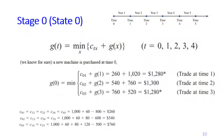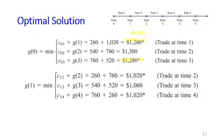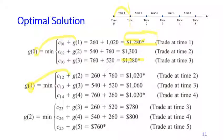We have now reached g(0), and we know the optimal cost from time 0 until the end of the problem equals $1,280. To trace the optimal policy, there are two asterisks so we may follow either one — both provide the same optimal cost. Following one path: from time 0 we go to time 1, using the machine for one year then buying a new one at time 1. Then use it for one year and sell again at time 2. At time 2, buy a new one and use it until time 5.